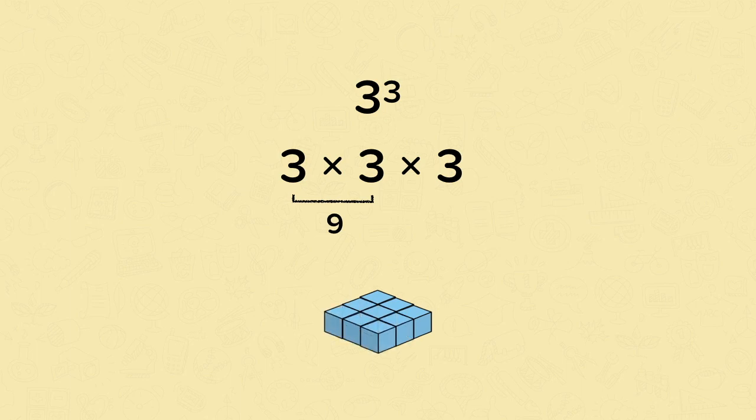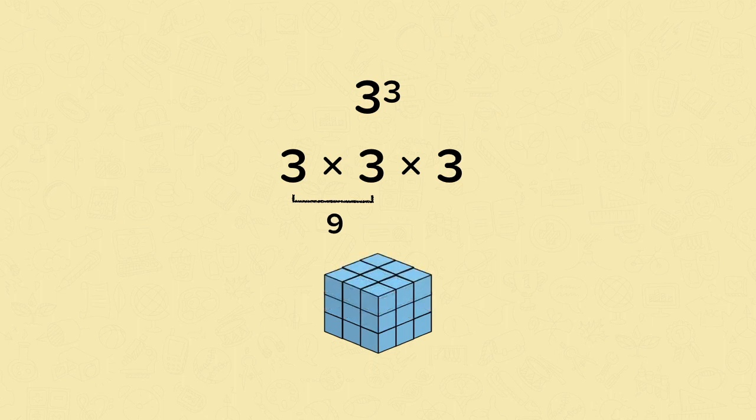And then to make our shape into a cube, we'd have to make it 3 cubes in height as well. So to work out how many cubes we've got all together, we need to do 9 times 3. This is 27. So 3 cubed equals 27.